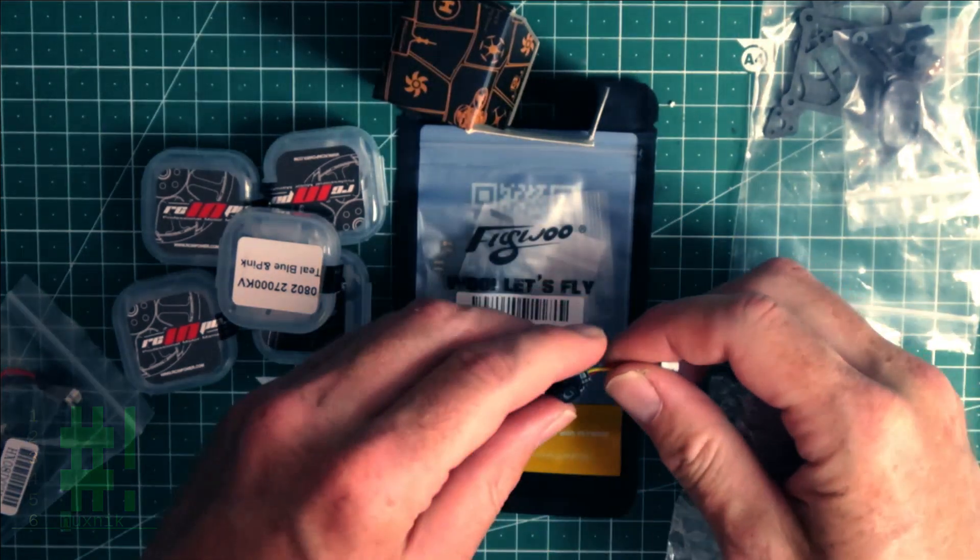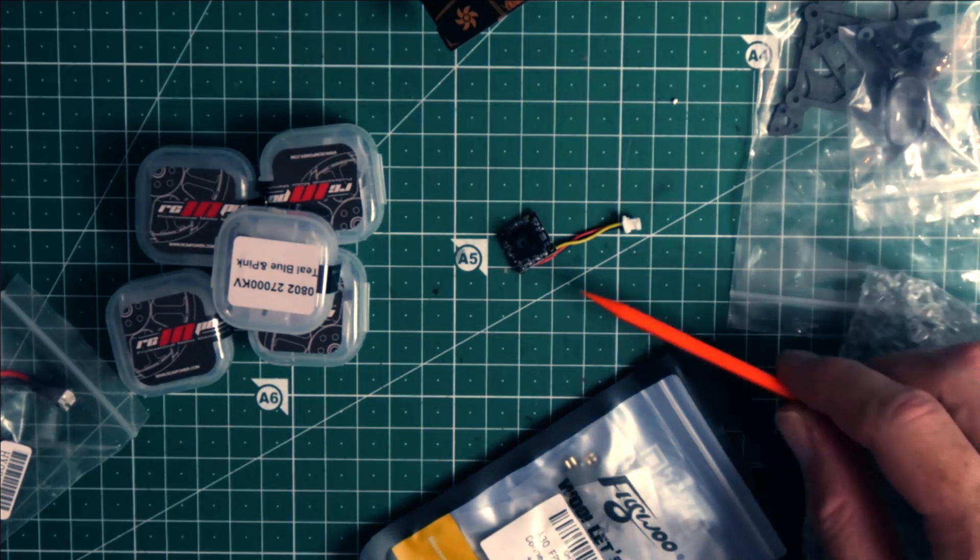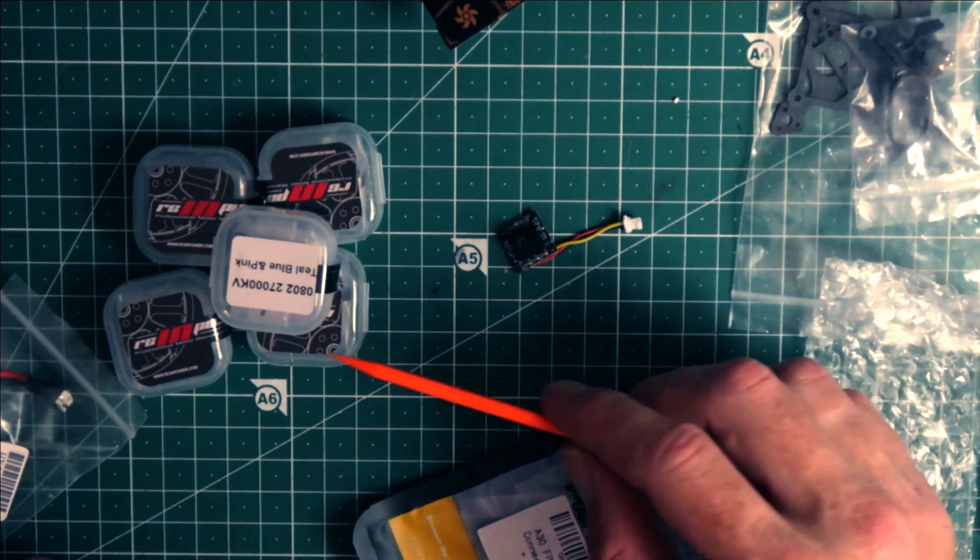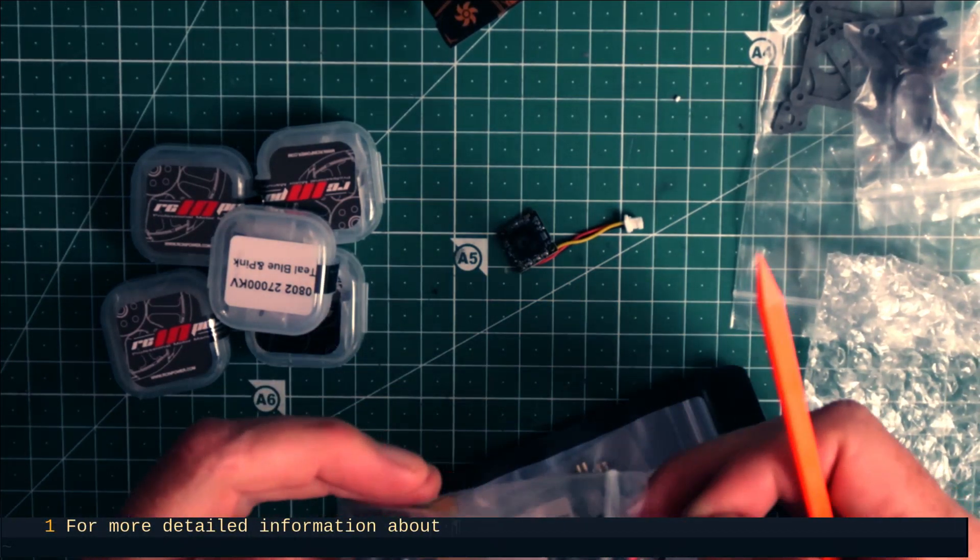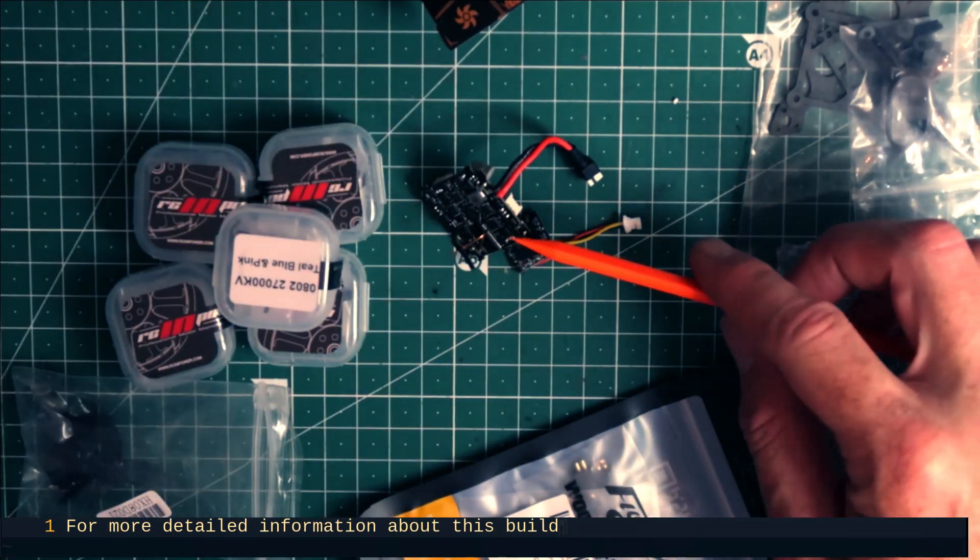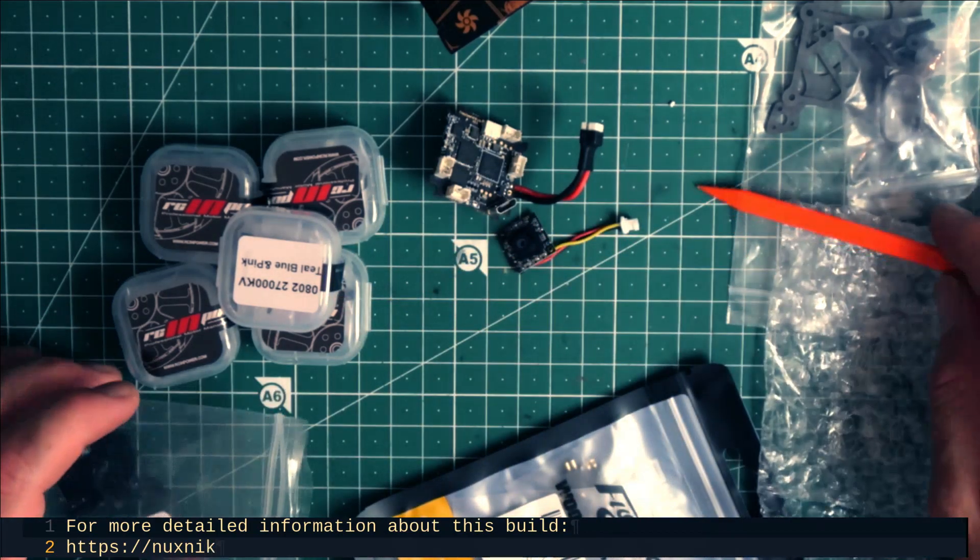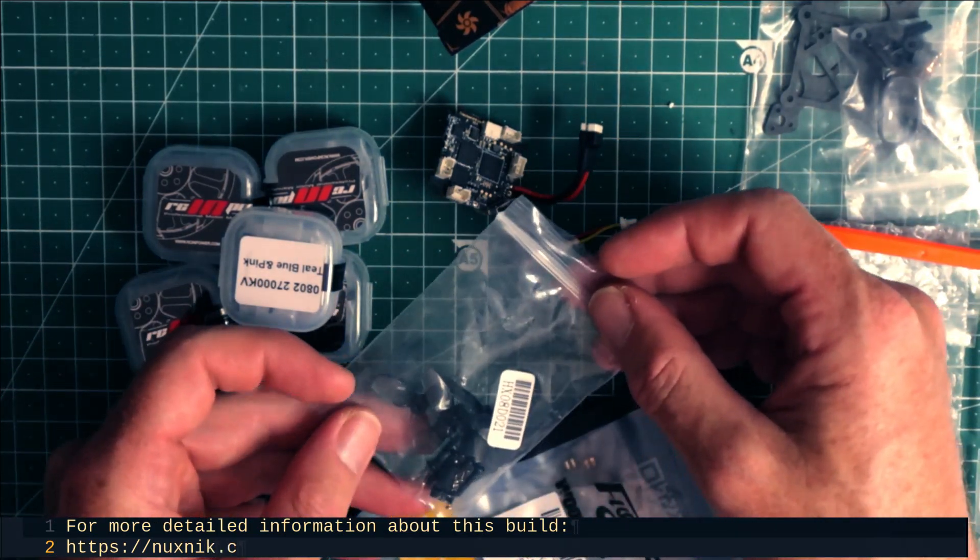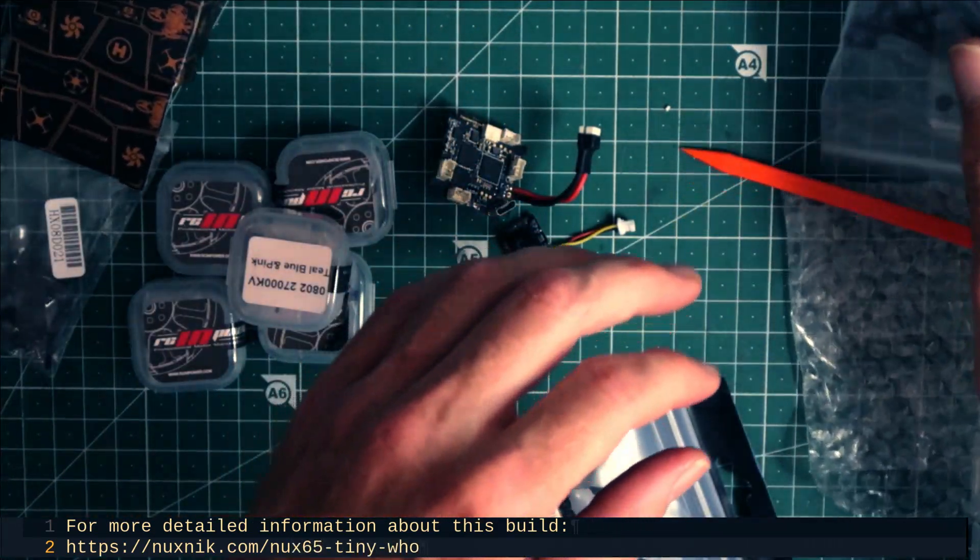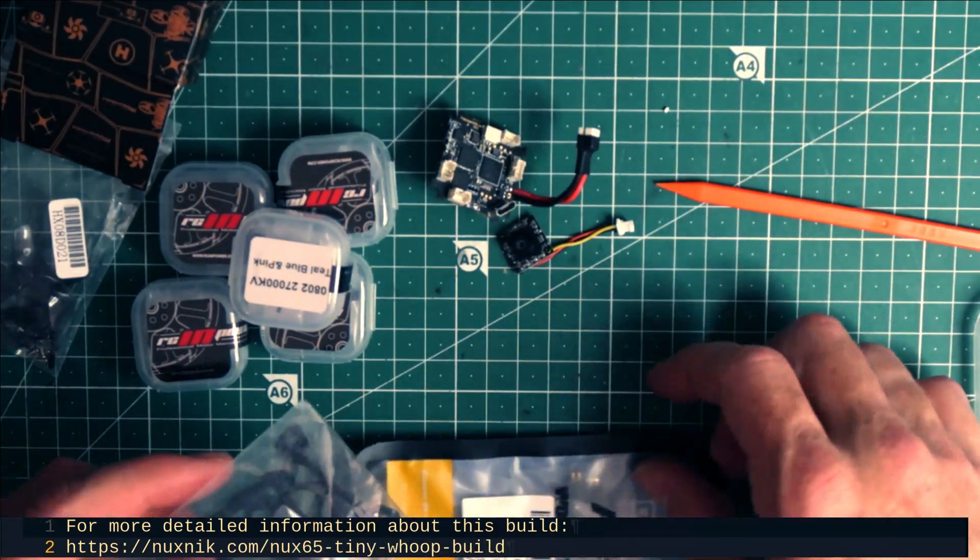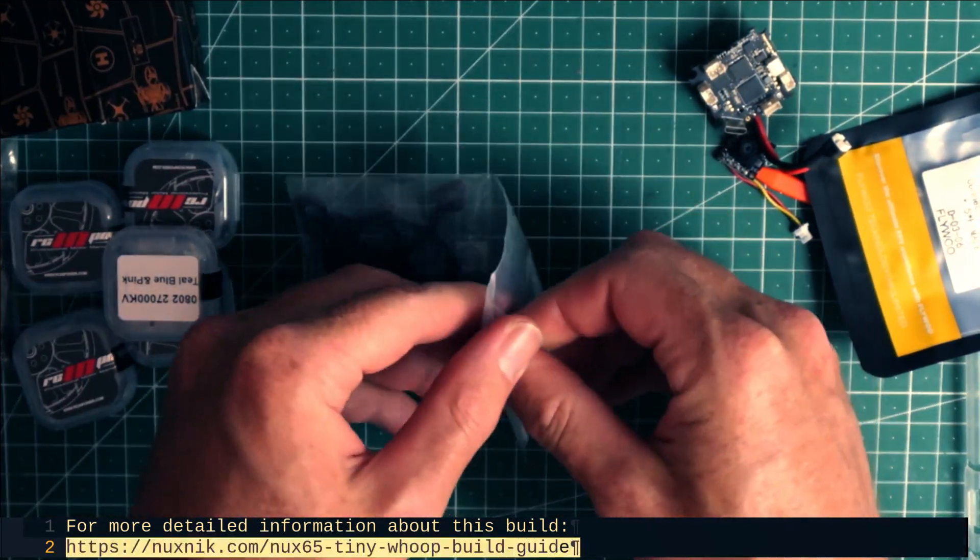A Runcam Nano 3 FPV camera. This project was built in the Fractal Whoop style. In other words, this design is lightweight and stresses minimalism and robustness. Another requirement is a Happy Model B Whoop 65 frame. A carbon fiber frame by TCMMRC.